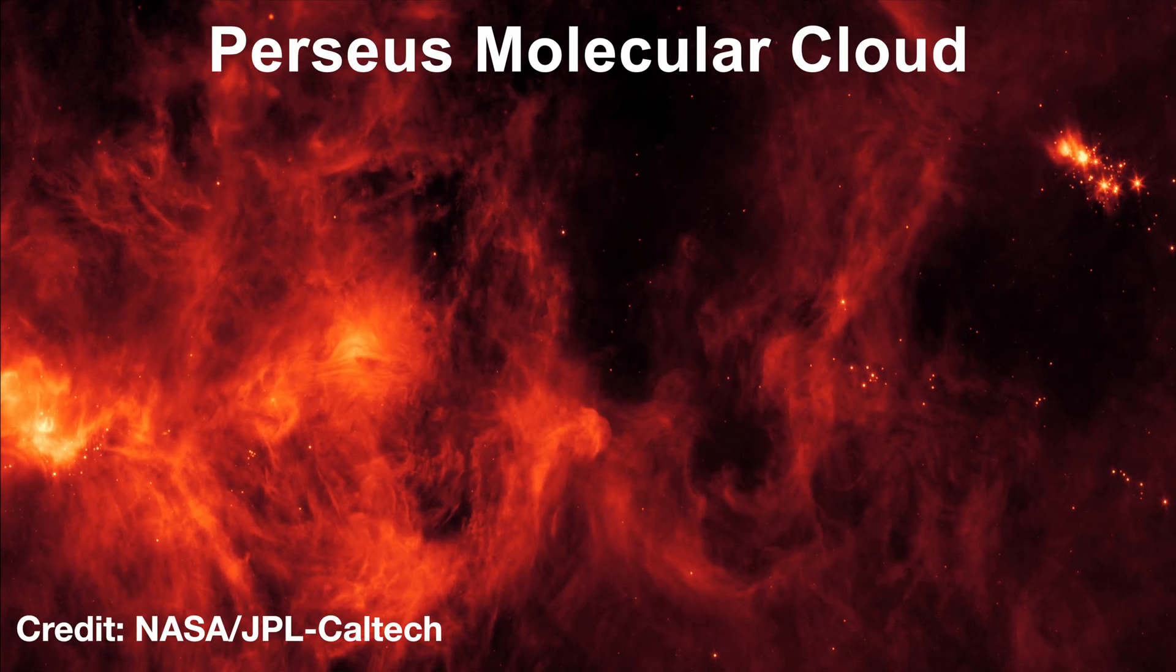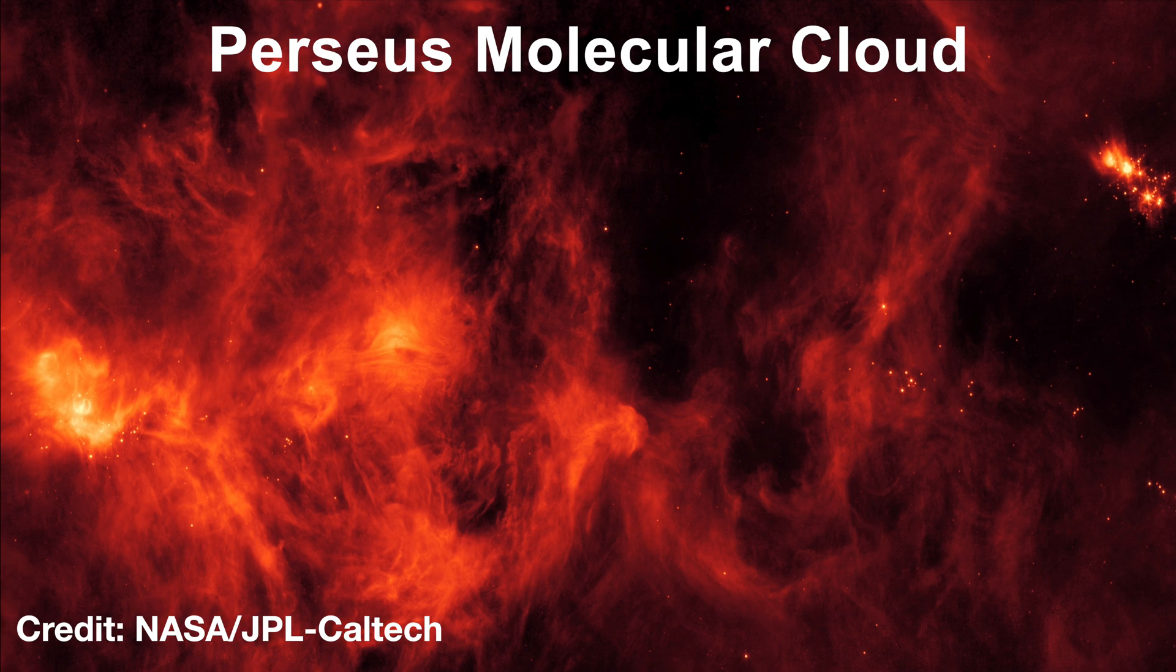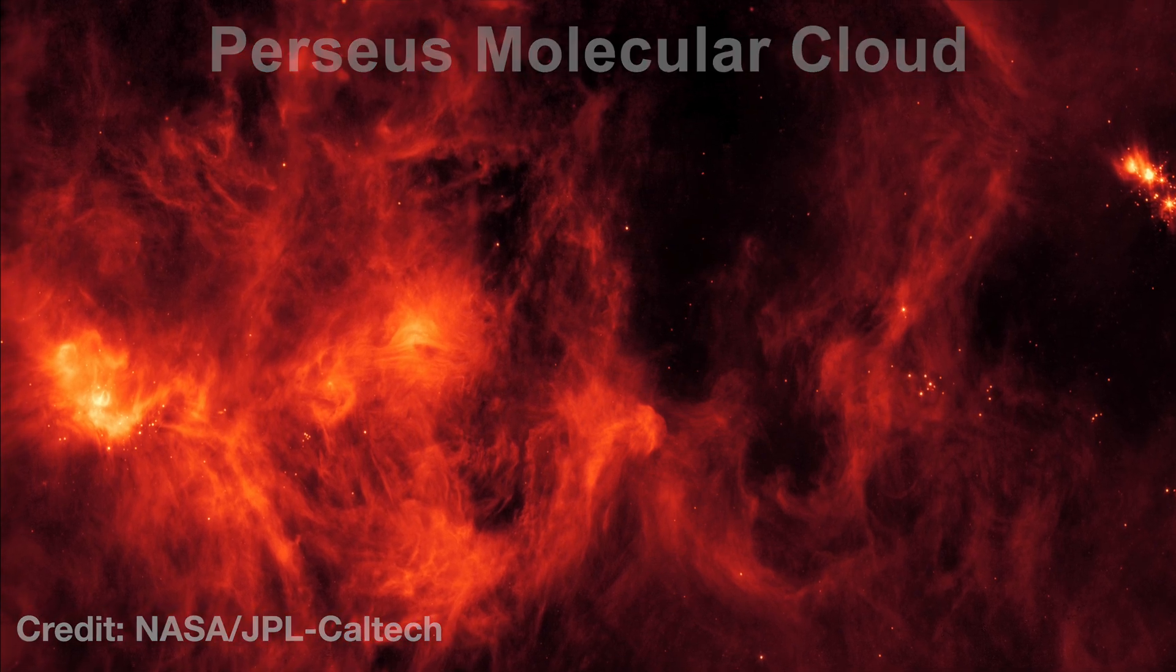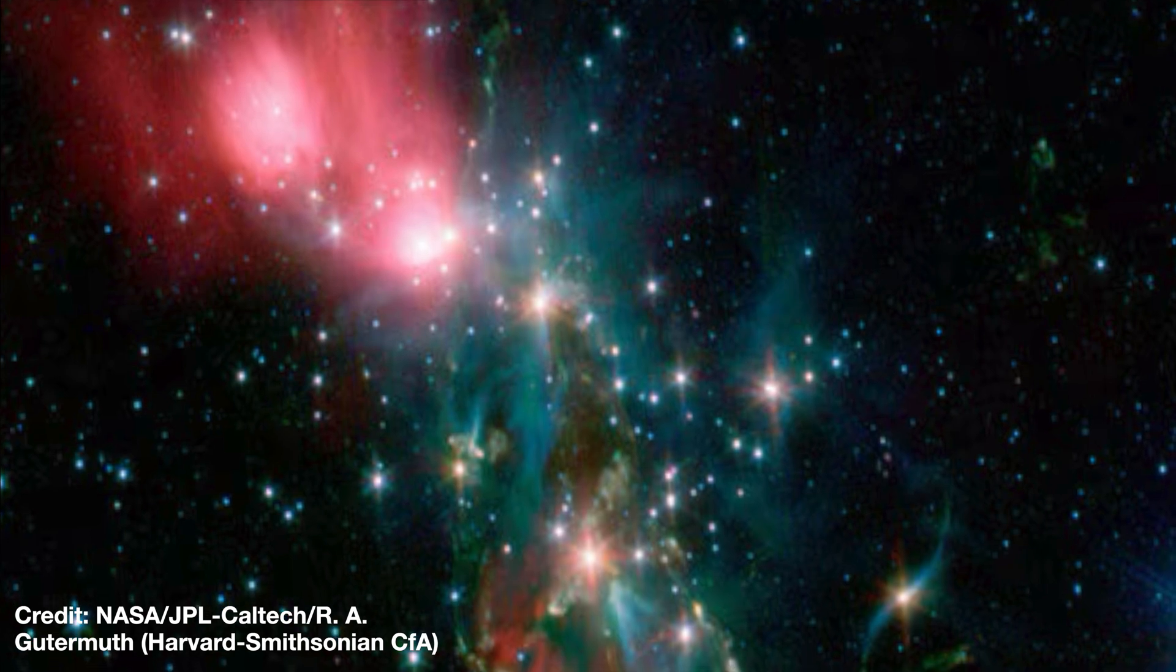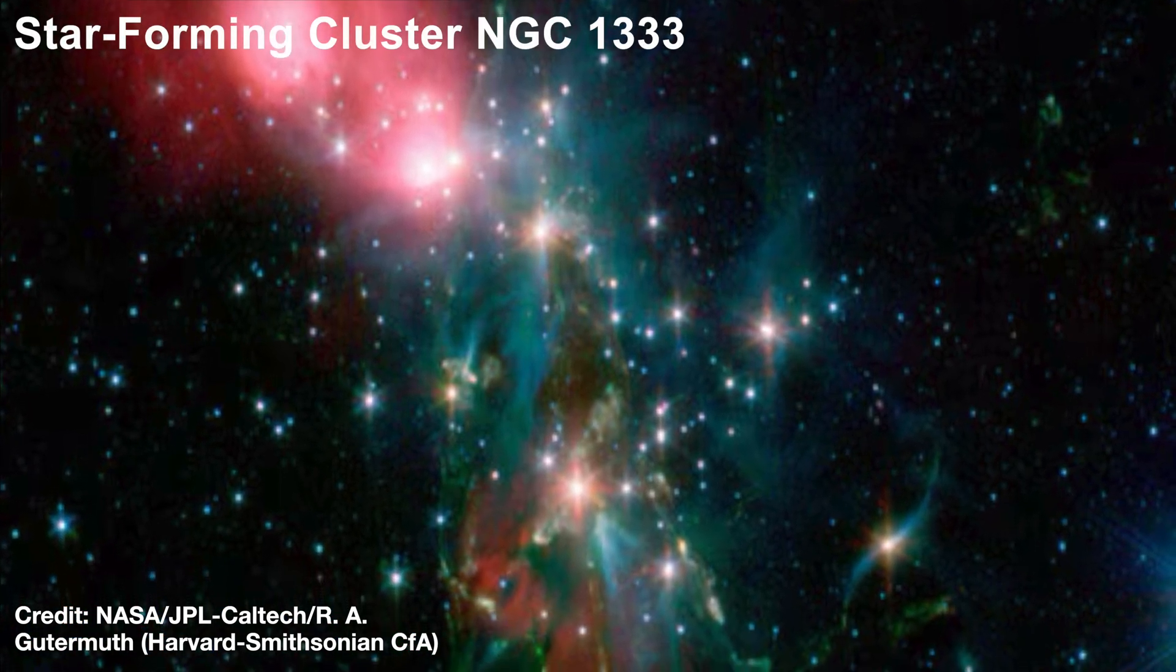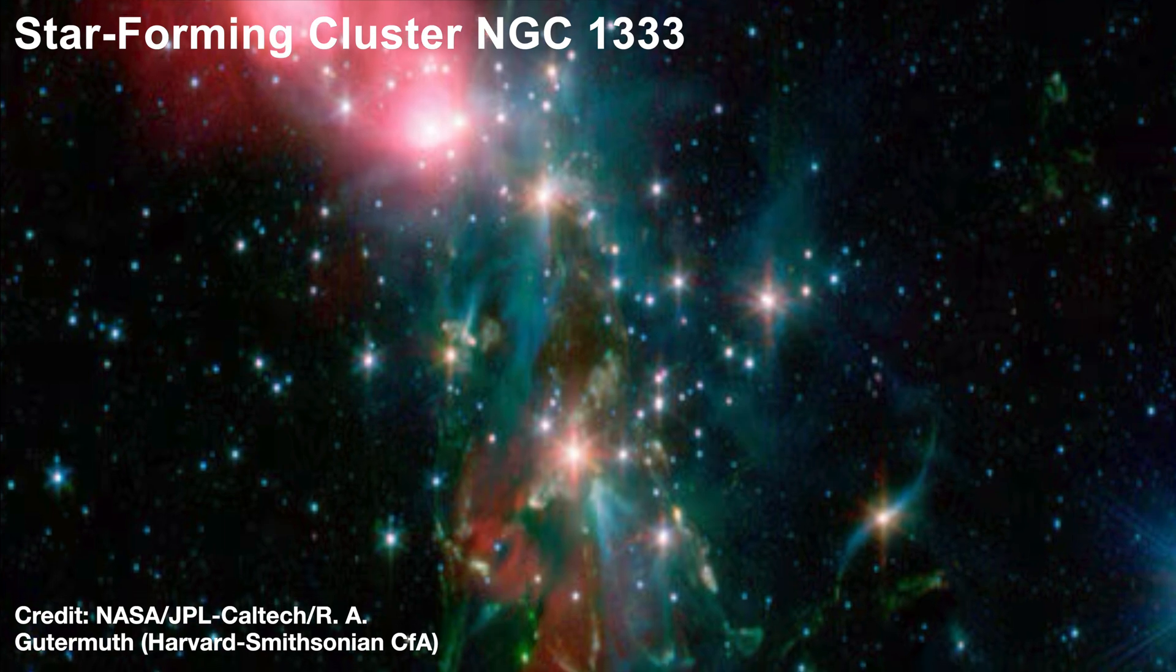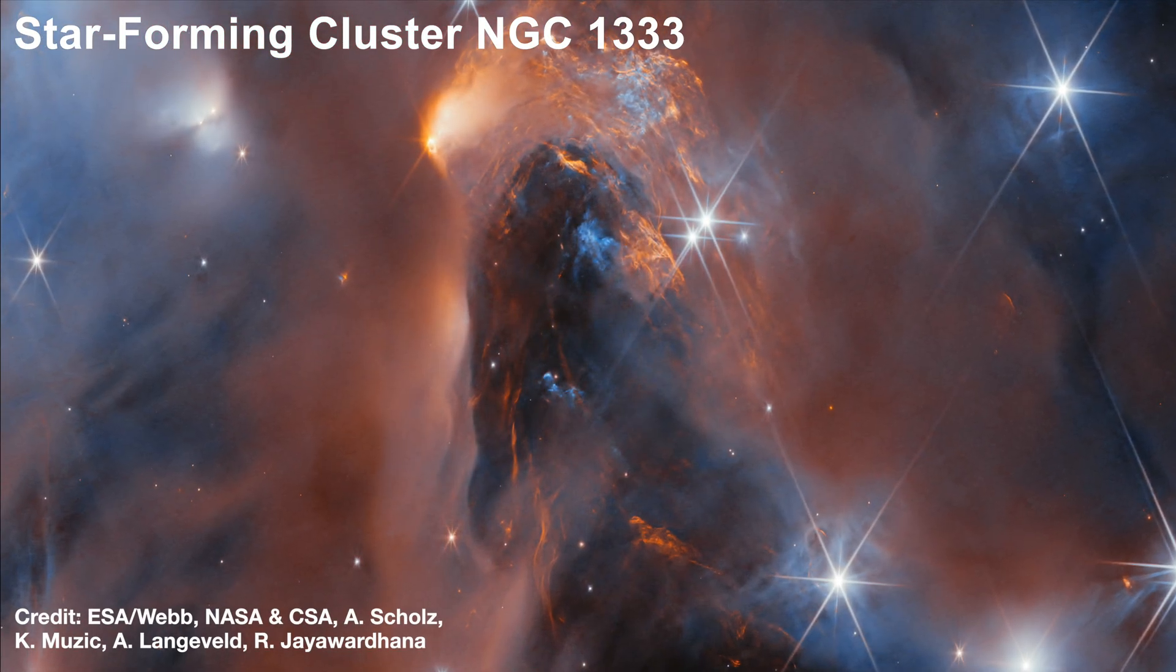That idea gained traction in 2017, when a survey of the Perseus molecular cloud, a nursery of young stars, found something striking. Nearly all Sun-like stars appear to be born in binary pairs. According to researchers, our Sun likely had a sibling too. But in many cases, those siblings don't stay together.